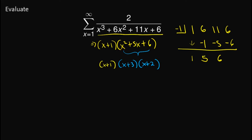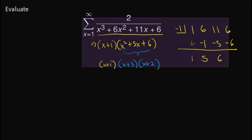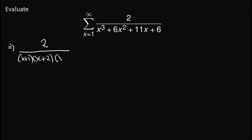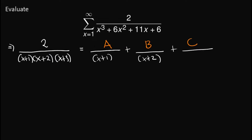So we have already factored the denominator into its linear factors. Let's focus on the fraction side: we have 2 all over x plus 1 times x plus 2 times x plus 3. The next thing we do is apply the concept of partial fractions — that is, we can write this as A over x plus 1, plus B over x plus 2, plus C over x plus 3.